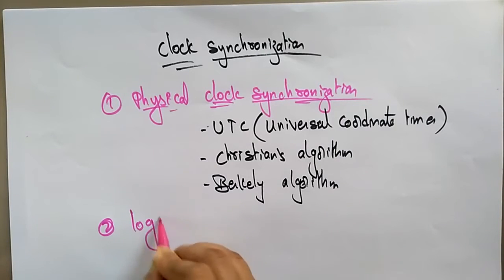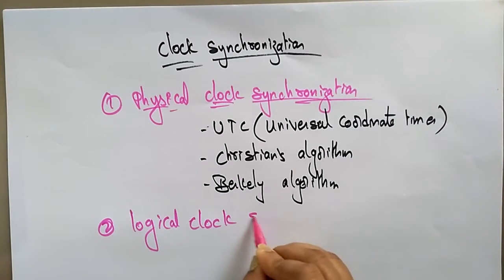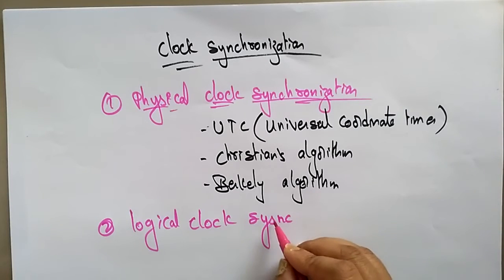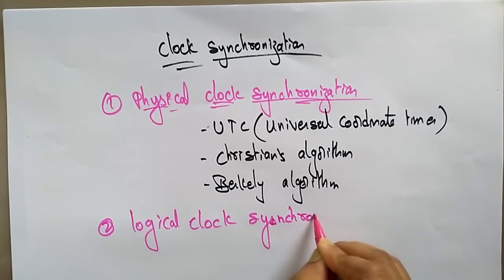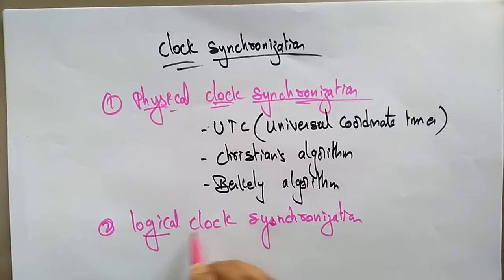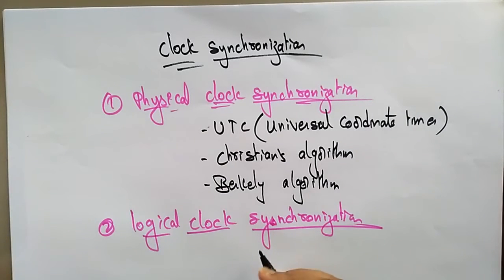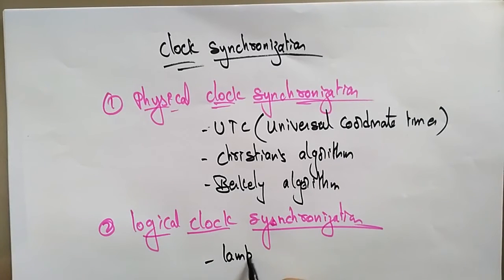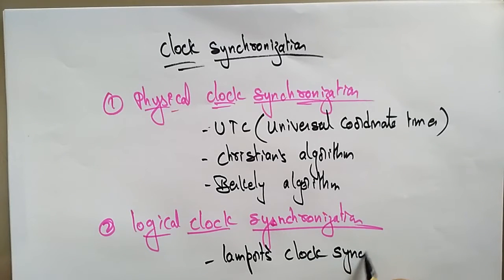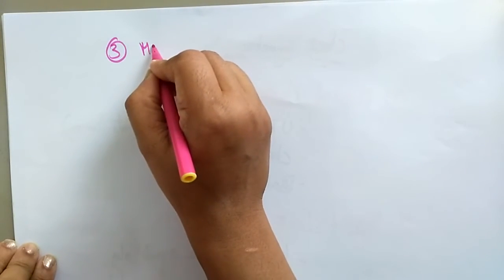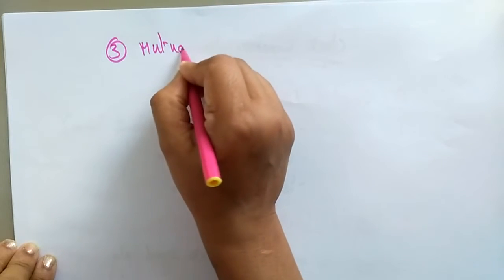Now the next type is logical clock synchronization. The different techniques we use for logical clock synchronization is Lamport's clock synchronization algorithm. Another type of clock synchronization is mutual exclusion — that is the third type.